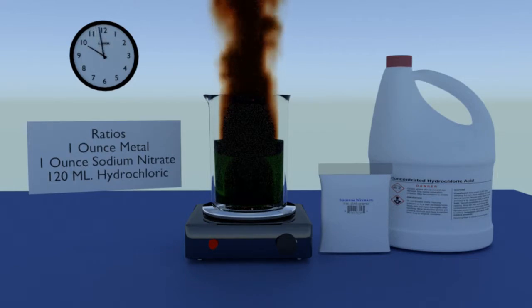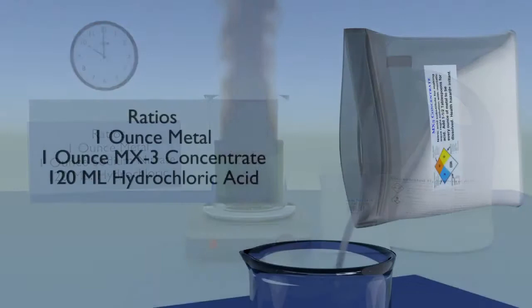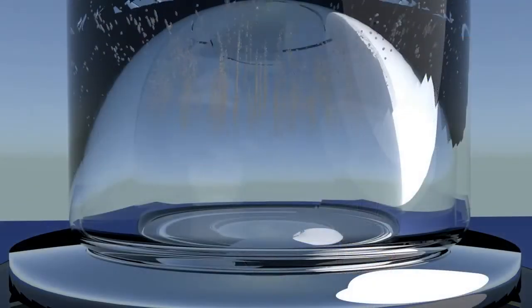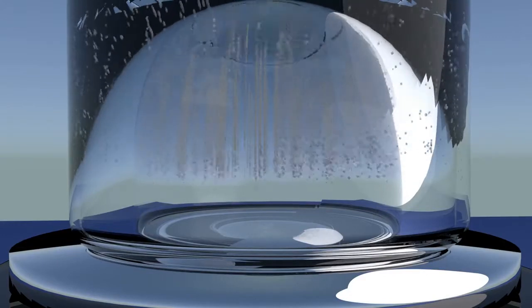Add one ounce of MX3 concentrate and 120 milliliters of hydrochloric for every ounce of metal that you are refining. MX3 concentrate should dissolve very rapidly.